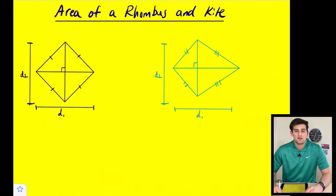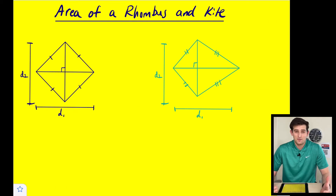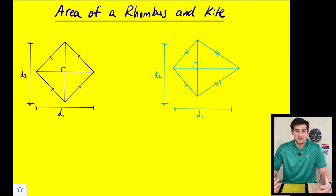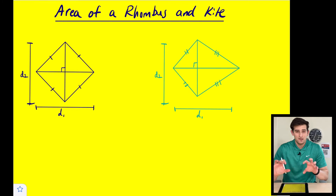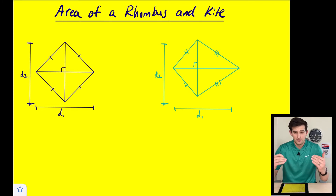Hello everybody. In this video we're going to talk about how to find the area of a rhombus and a kite. The reason why we're doing a rhombus and a kite together is because the area formula is the same. So let's see if we can derive the area formula for both by looking at the shape of each and dividing them into two congruent triangles.